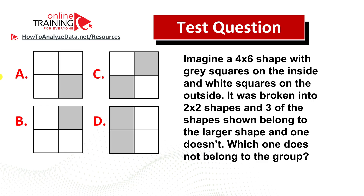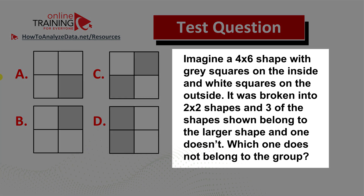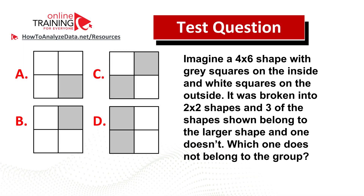Here's a tricky IQ and aptitude test question you might frequently see on the test. Imagine a 4 by 6 shape with gray squares on the inside and white squares on the outside. It was broken into 2 by 2 shapes, and three of the shapes shown belong to the larger shape while one doesn't. Which one does not belong to the group? Pause this video to see if you can come up with the answer on your own.